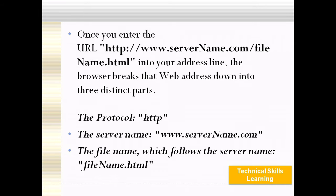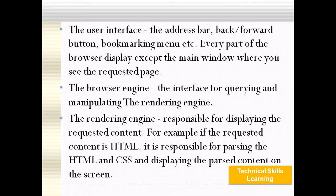In order for your browser to actually connect to the web server to retrieve the information you request, it communicates with a name server to translate the server name into an IP address. Your web browser is then able to connect to the web server at the resolved IP address on port. Once connected using HTTP, the browser reads the hypertext markup language — HTML — the authoring language used to create documents on the worldwide web, and the data is then displayed on the web browser.